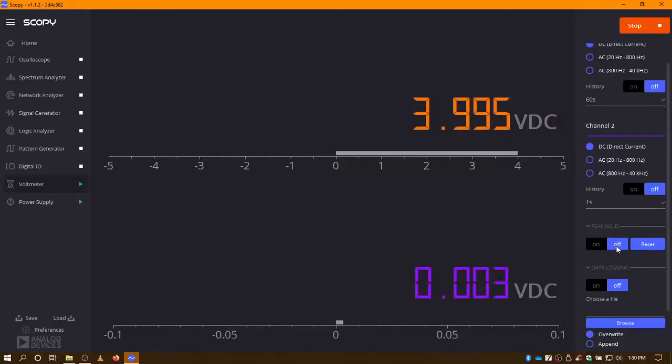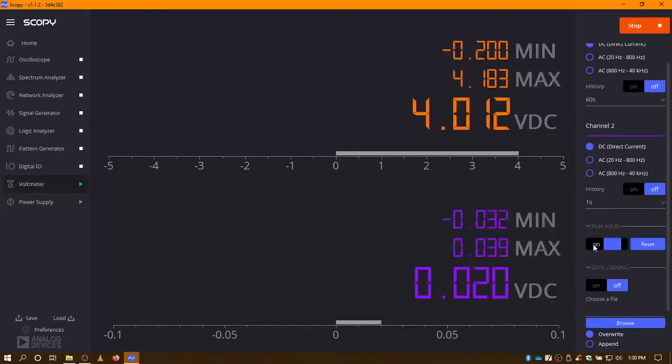One other feature you can have is peak hold. Right now, that is turned off. Let's turn it on. And, that will show us what the minimum voltage was and what the maximum voltage was. So, if all of a sudden this was to spike up to four and a half volts, that would increase. So, you would see the range that input to the voltmeter has gone.